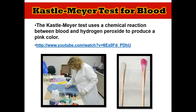This is an example of the Castlemayer test. You can see in this picture the lab tech is swabbing what she believes may contain human blood. She then puts it through a series of three reagents. If it does test positive for blood, it's going to turn this bright pink color. You can see on the screen — it's a beautiful color, but it does indicate the presence of blood.